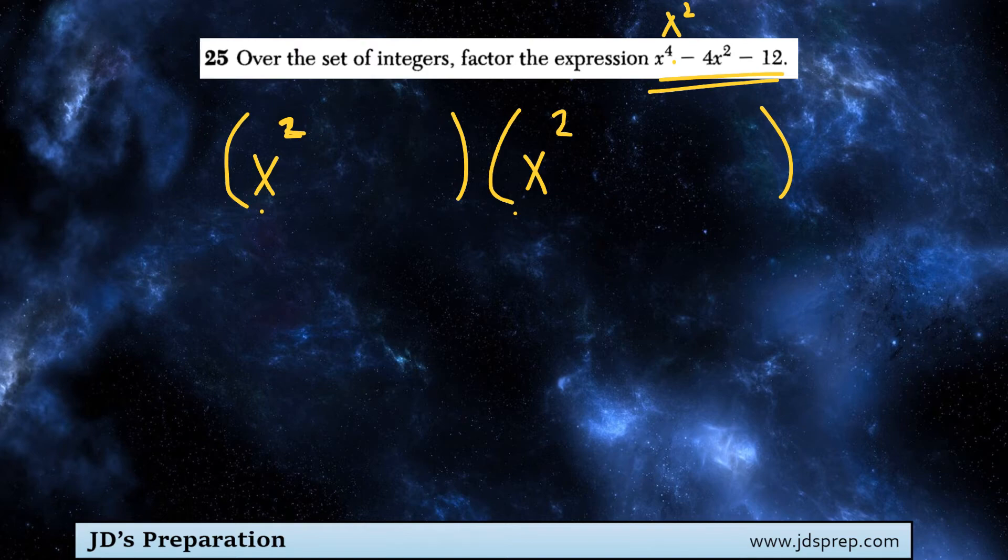So, now what we need to think is we need to come up with two numbers whose product is negative 12, but their sum is negative 4.